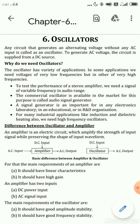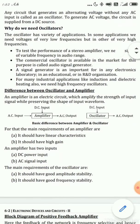Hello everyone. We are going to start with oscillators — this is our sixth module of the chapter, and it is the last module, containing 20 marks. An oscillator is any circuit that generates an alternating voltage, meaning an AC signal. To generate AC voltage, a circuit is supplied from DC — no AC input is applied, but it generates an AC signal. The first question that arises is: why do we need oscillators?